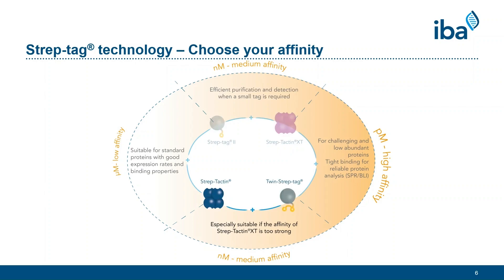Because Streptactin XT exhibits the highest affinity for Streptags, the tagged protein may, in rare cases, be difficult to elute. In those cases, a combination of Streptactin and the twin-streptag can be used for purifications with a high yield. The combination of Streptactin XT and the twin-streptag is characterized by an exceptionally high affinity in the picomolar range. This combination is therefore especially suitable when working with proteins of low abundance.